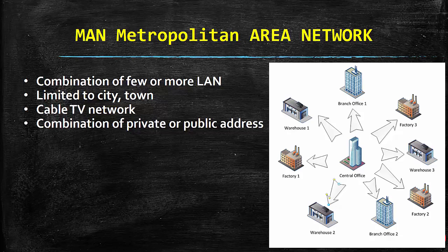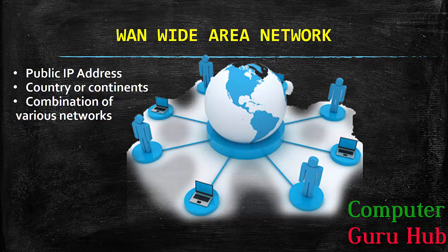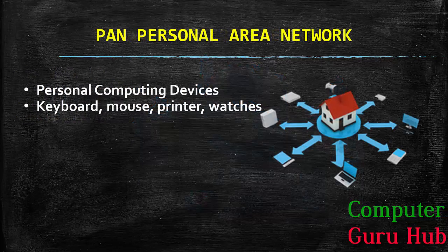In MAN we can have a combination of private addresses as well as public addresses. By definition, a network — or we can say the internet — is a network of networks. So what does a network of networks make? It makes a WAN — Wide Area Network. When a huge amount of LANs or MANs are connected together, they make a Wide Area Network, called WAN. Basically, WAN uses public IP addresses and is confined to countries or continents, and it is a combination of various types of networks.